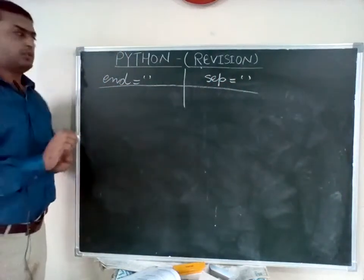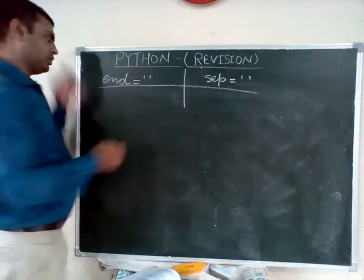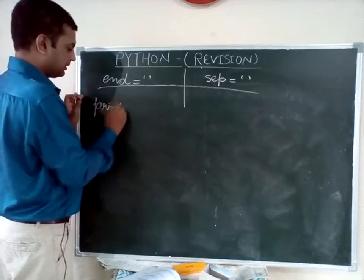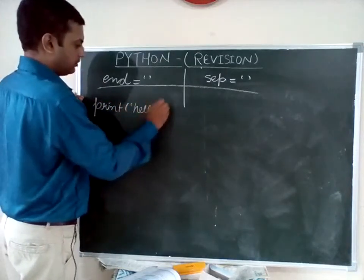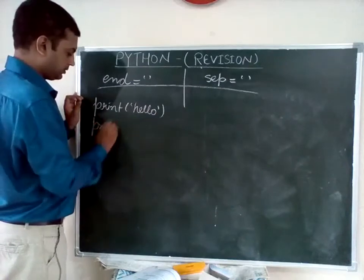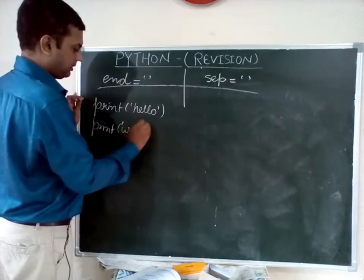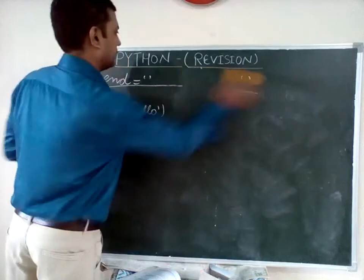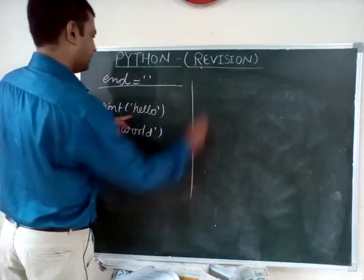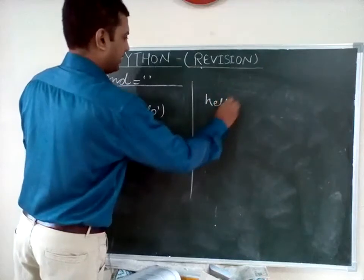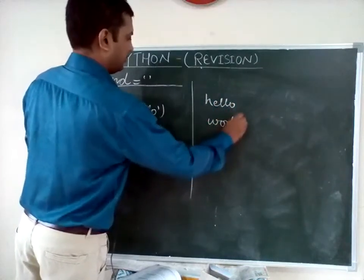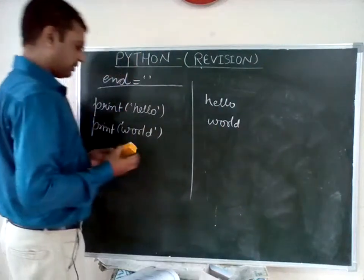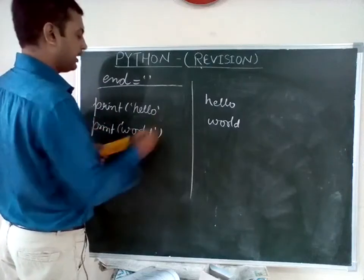Now the end and sep functions. If two print statements are there — print hello and print word — the output will be on two different lines: hello and word. Now if you want to produce the output in a single line, you can use two print statements but update with comma end equals empty string. So two print statements will not produce two different lines.